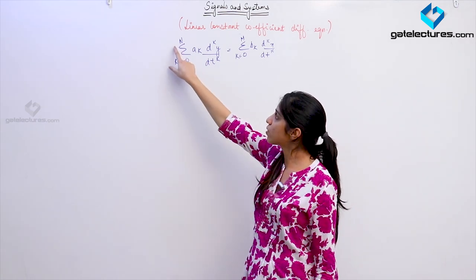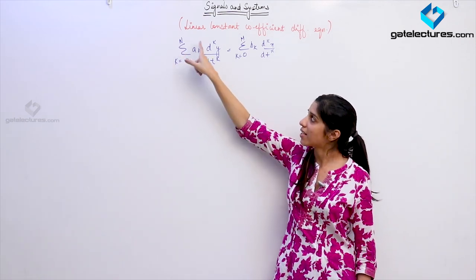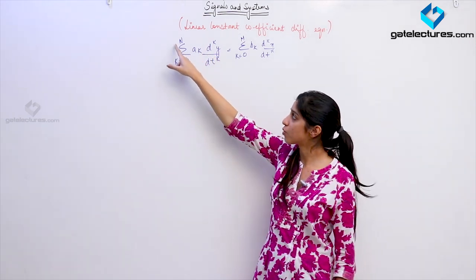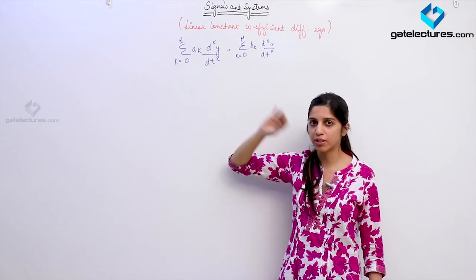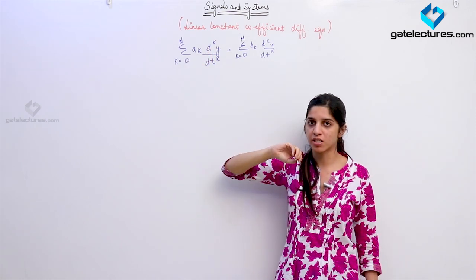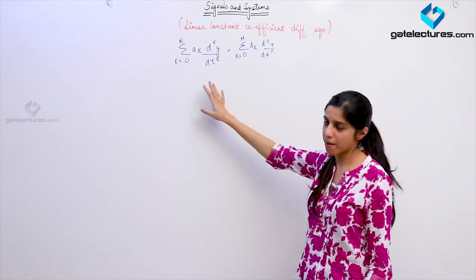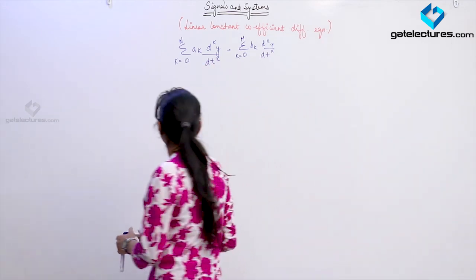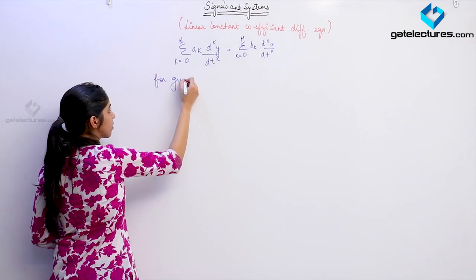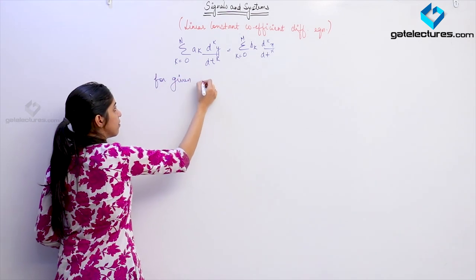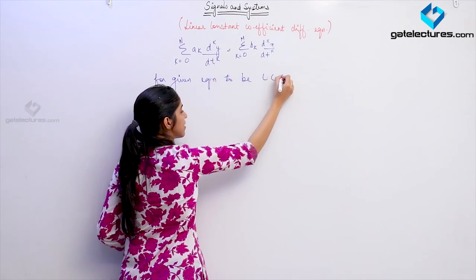This n is known as the order of the differential equation, because n is the highest power — n is going to be the highest power on the LHS — and this is going to be the order of the differential equation. Now, any equation of this form — I am writing down all the conditions for this given equation to be LCCDE.